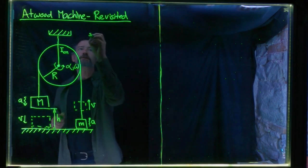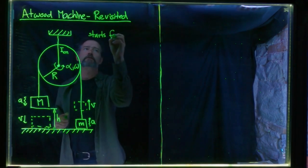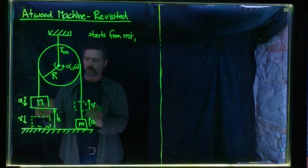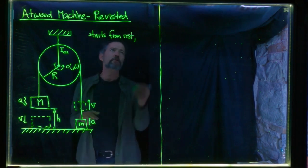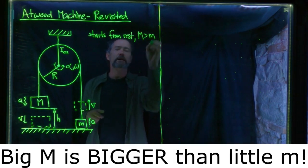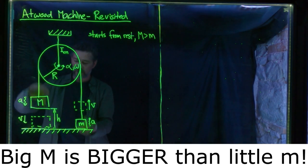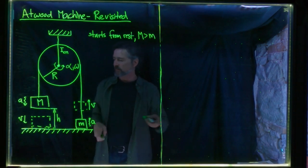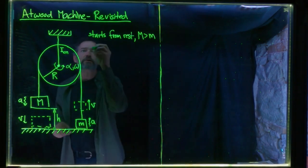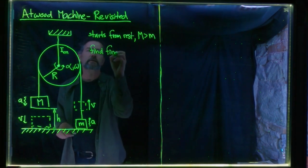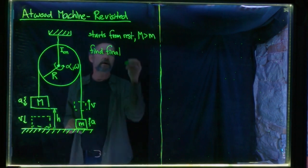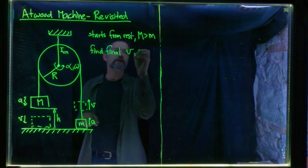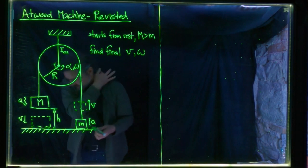The machine starts from rest, so all linear velocities and the angular velocity are initially zero. We assume big M is greater than little m, so it's big M that accelerates down and little m accelerates up. A and alpha are positive. We want to find the final linear speeds of big M and little m and the final angular speed of the pulley, just before big M hits the ground.